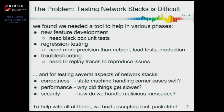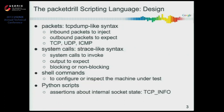So to help with all these, we built a scripting tool which we call PacketDrill. It has four types of statements. First and foremost, there are packets. For this, we used a syntax that's basically like tcpdump, since most people are familiar with that. With packets, you can specify both the inbound packets that the tool should inject into the kernel under test, and also the outbound packets that you expect the kernel to send — exactly what bits you expect in those packets. We support TCP packets, UDP packets, and incoming ICMP packets to test things like path MTU discovery.